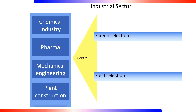Industry sector: like the material type, the industry sector also has a control function in the material master. When you create a material master record, the industry sector determines the sequence of views and field selection. Importantly, the industry sector you assign to a material cannot be changed later. In customizing, companies can define new industry sectors and maintain the field reference for field selection control. Some data in the material master is used for information purposes only, such as description, size, and dimensions. Other material data has a control function — for example, the valuation class determines which GL accounts will be posted to.